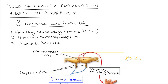The role of growth hormones in insect metamorphosis. There are three hormones involved. The first is molting stimulating hormone or MSH, produced by the neurosecretory cells in the brain, which stimulates the prothoracic gland in the thorax to secrete the second hormone, molting hormone or ecdysone. Then there is juvenile hormone, produced by a pair of glands in the brain known as corpus allata.